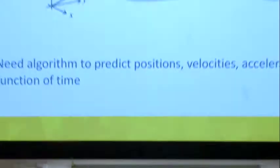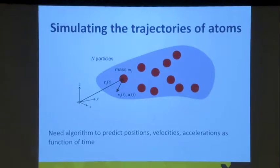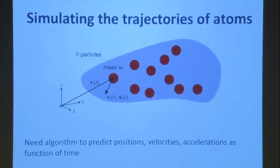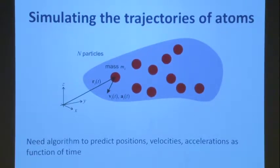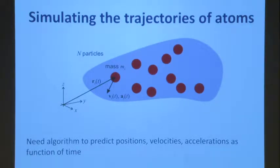What you do is simulate the trajectories of atoms. Assuming something simple — let's say you have nitrogen in a box, and you want to know how fast the molecules are moving at a certain temperature. You have spheres of nitrogen, you know the mass, you have a certain number of particles. You need an algorithm that helps you predict how position, velocity, and acceleration vary as a function of time.